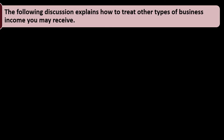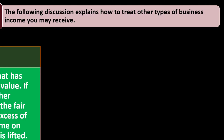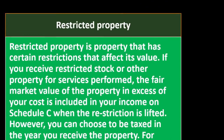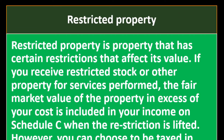Now we're looking at other income. The following discussion explains how to treat other types of business income you may receive. Normally business income, as seen in prior presentations, can be fairly straightforward — you think about the general thing you do to generate income. Now we're getting into other types of income. Restricted property is property that has certain restrictions that affect its value.